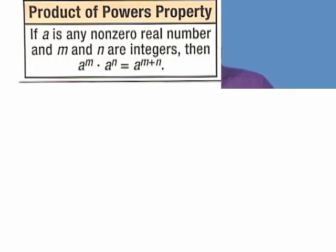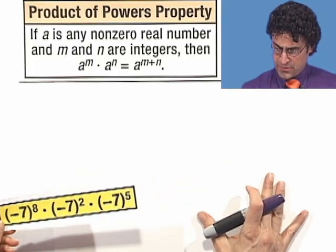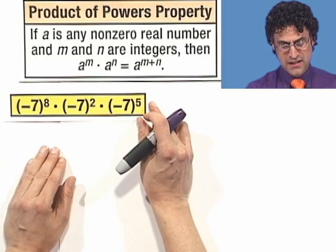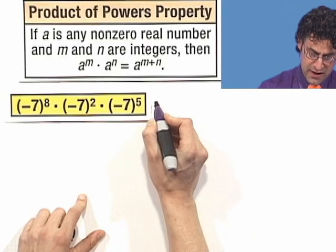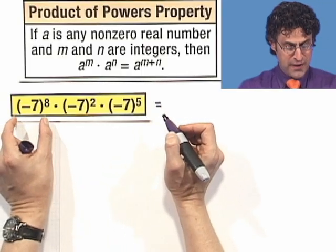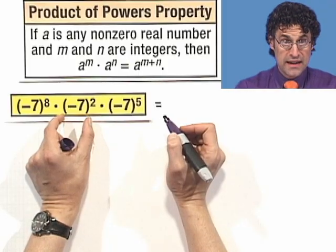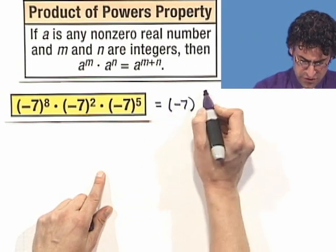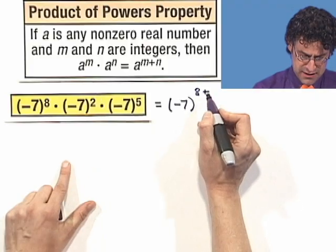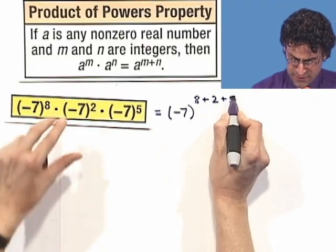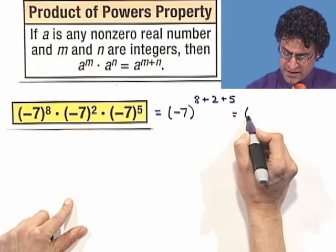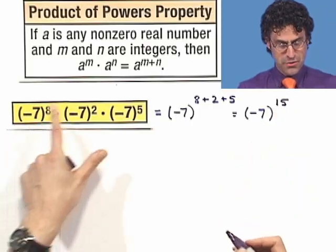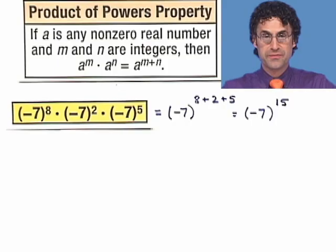Let's try some examples together. The first example: negative 7 raised to the 8th, multiplied by negative 7 squared, multiplied by negative 7 to the fifth. You can imagine 8 factors of negative 7 here, 2 factors here, and 5 factors here. How many factors do we have together? Negative 7 to the 8 plus 2 plus 5, which equals negative 7 to the 15th. Pretty cool.